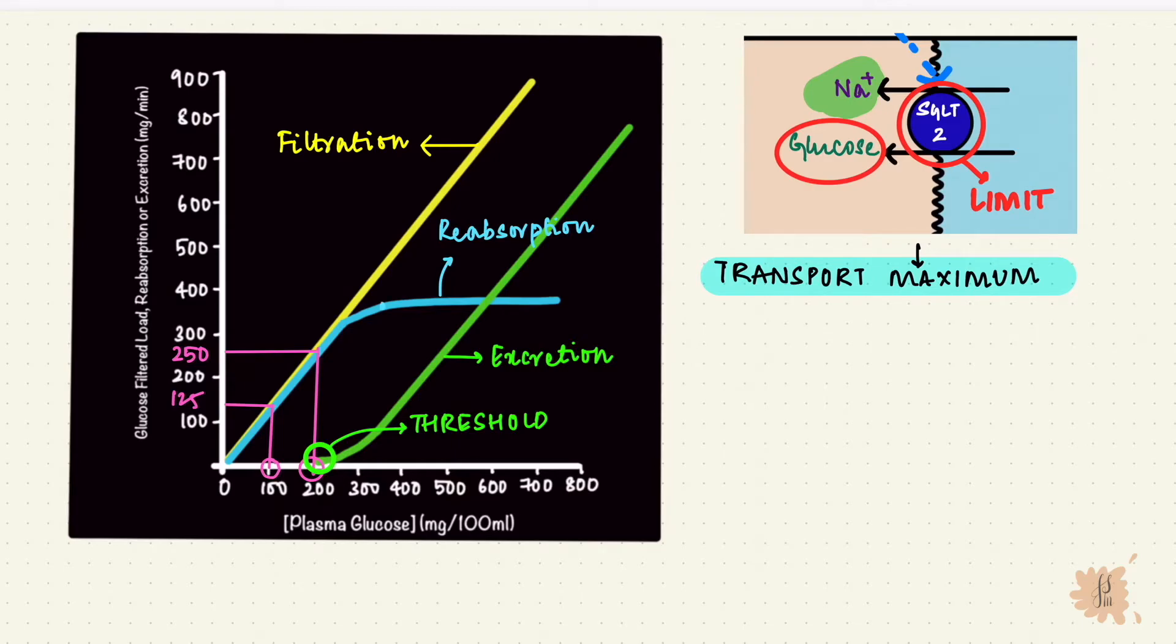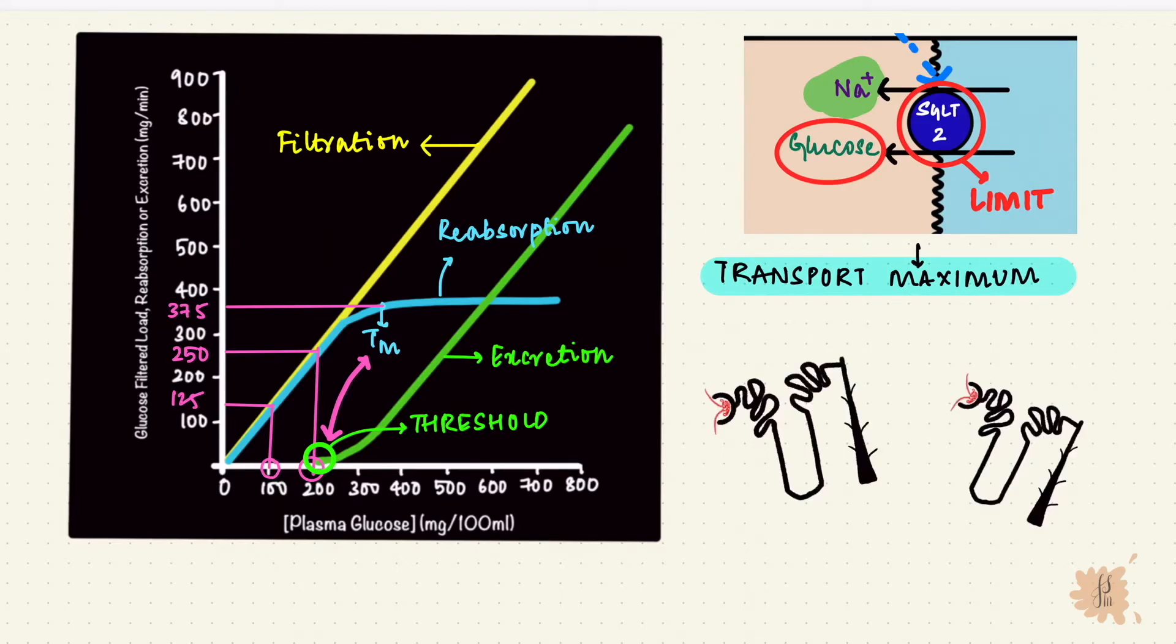The transport maximum is the point at which all the carriers get saturated, so they can no longer reabsorb glucose. So again, glucose will appear in the urine at this point. So that's around 375 mg per minute. Now ideally, these two should be the same. The difference between the threshold and the transport maximum is because not all nephrons are the same. Some of them reach their transport maximum earlier than the others, so glucose appears in the urine a little earlier than when the transport maximum is reached. This period is called splay.